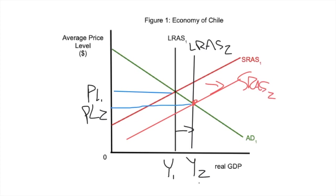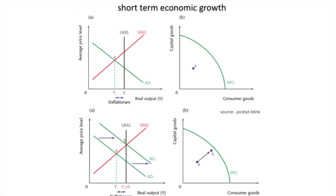So there's the third way of showing an outward movement of economic growth. Now let's take a look at the next slide, done by Jocelyn Blink. Jocelyn Blink puts together a beautifully well-done and very effective IB economics course companion — a textbook that's excellent. What she did with these slides is show growth on the long-run aggregate supply neoclassical model, but you can also show growth on a production possibilities curve.